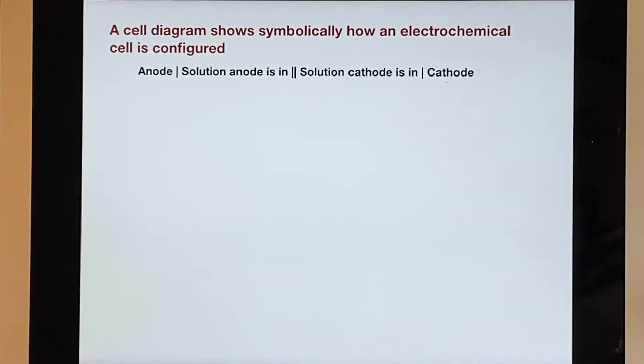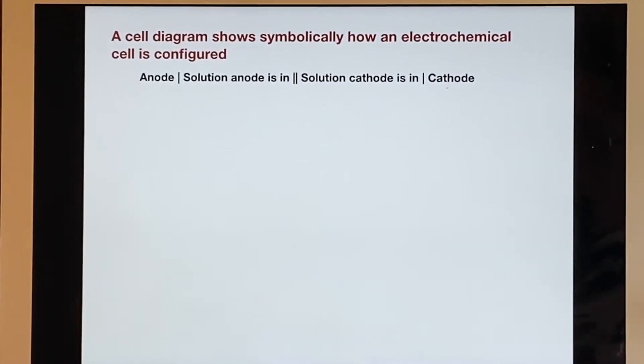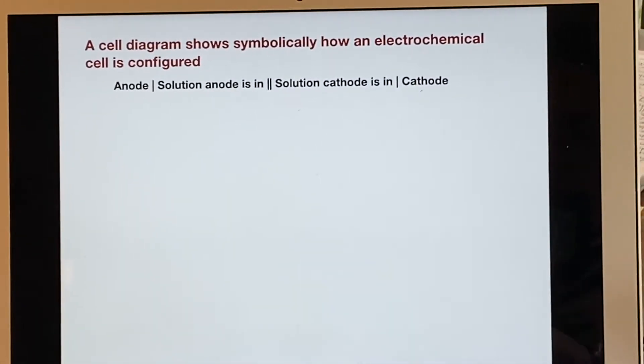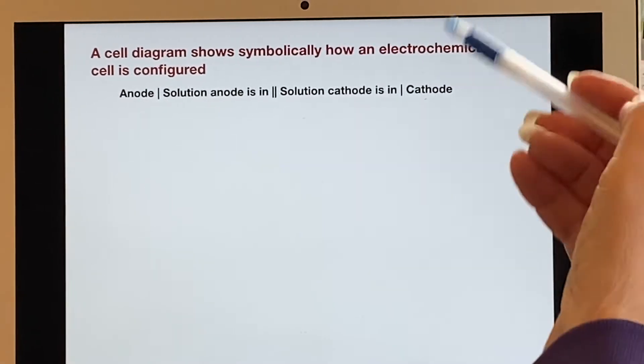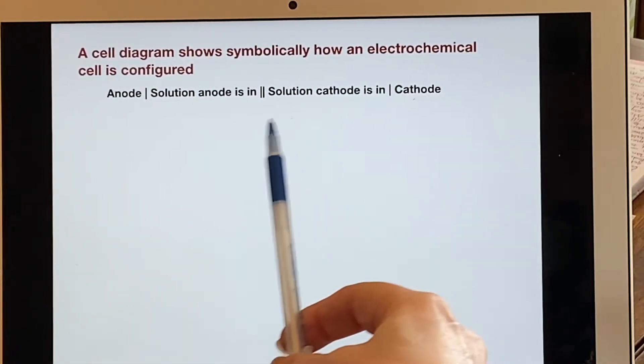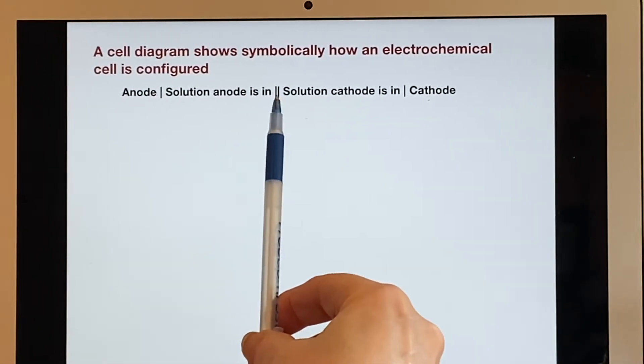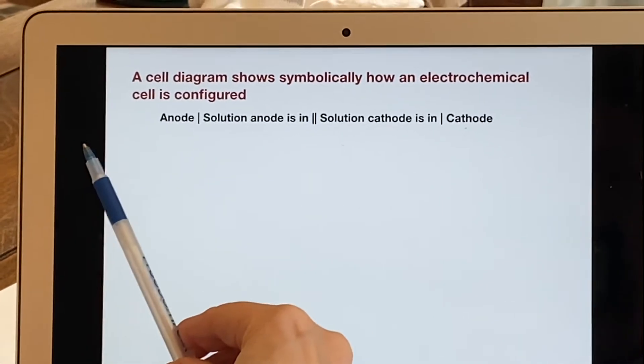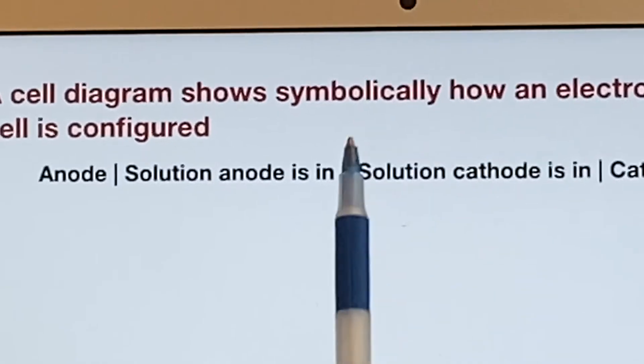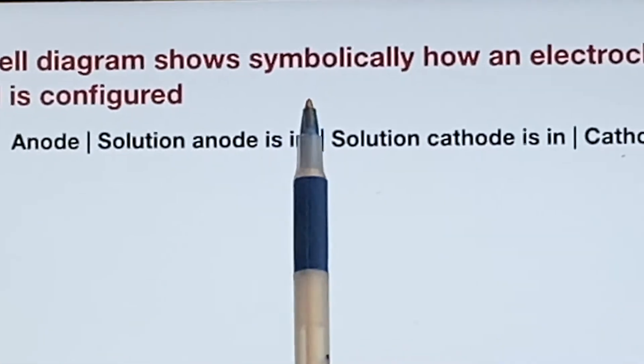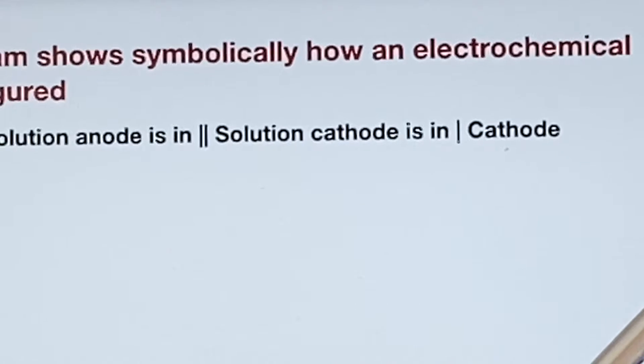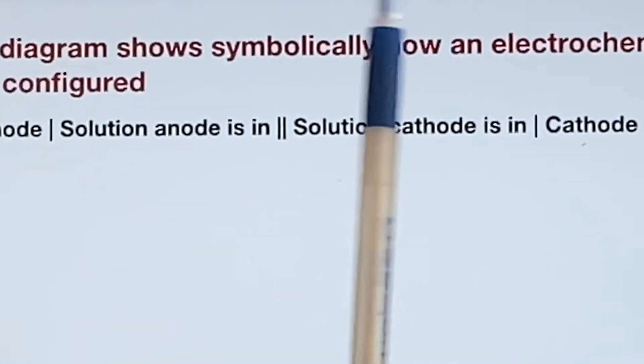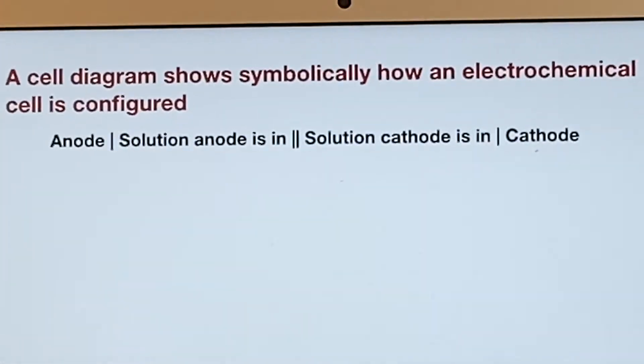When we have a cell diagram, it will show us symbolically how the cell was configured. We had a nice picture before. So what do we do in a cell diagram? We put it in a particular order. The double bars up and down here separate the stuff that's anode from the stuff that's cathode. Notice anode is earlier in the alphabet than cathode is, so we can think of this as being in alphabetical order to help us remember this.